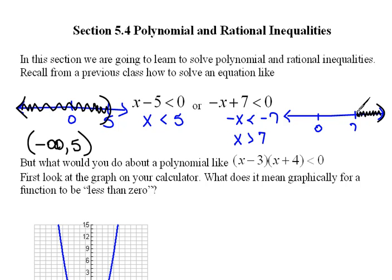7 itself would not be included because there's no equality there. So if we were going to write this in interval notation, we would start at 7 with a parentheses, and we would use all of the numbers going up to infinity.